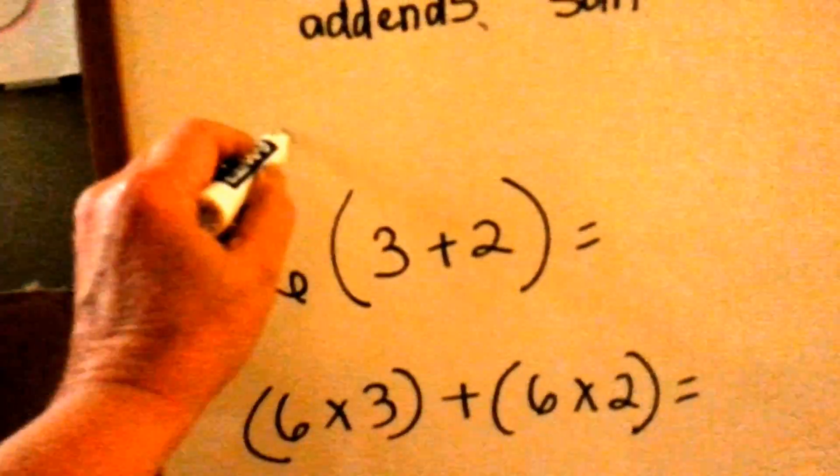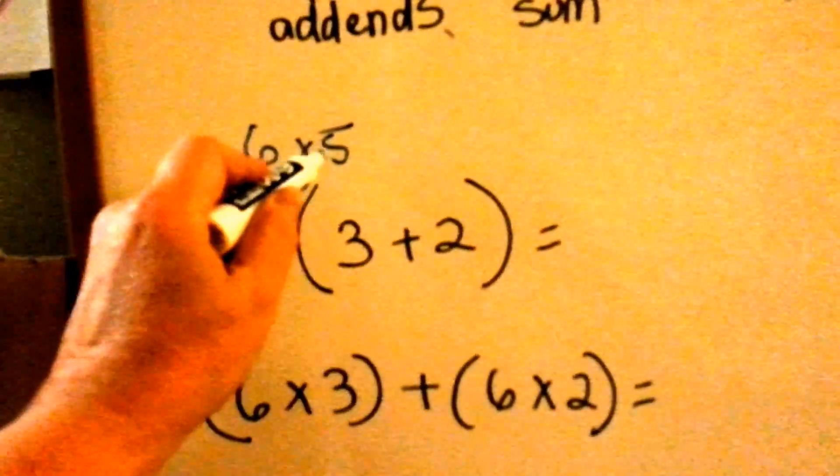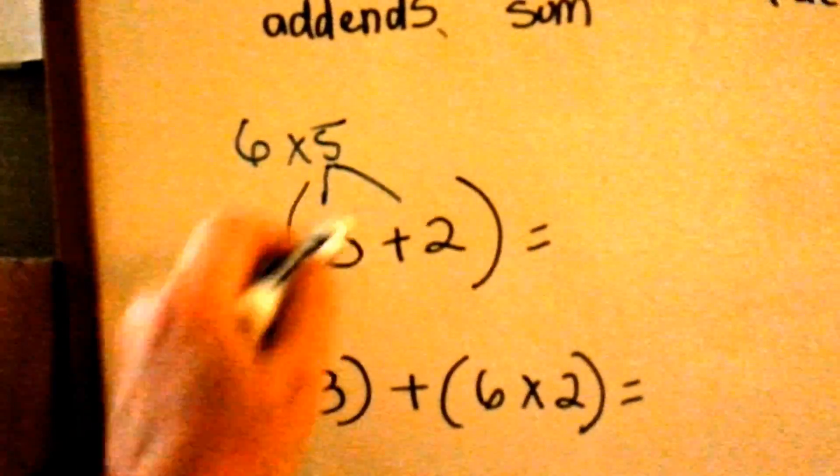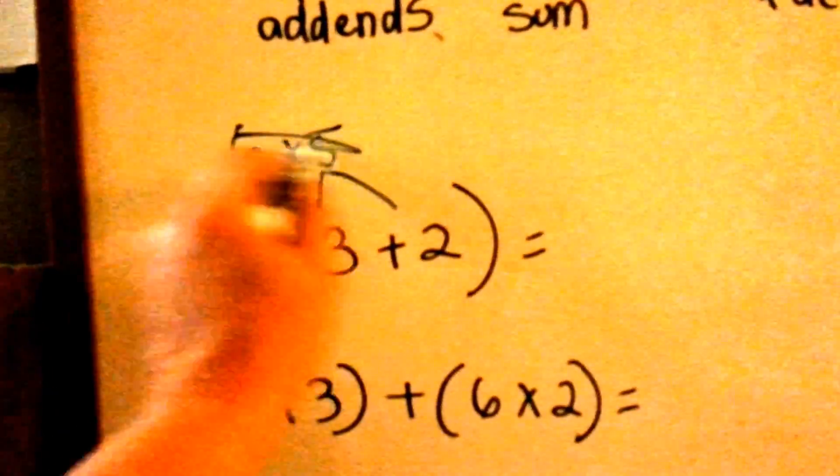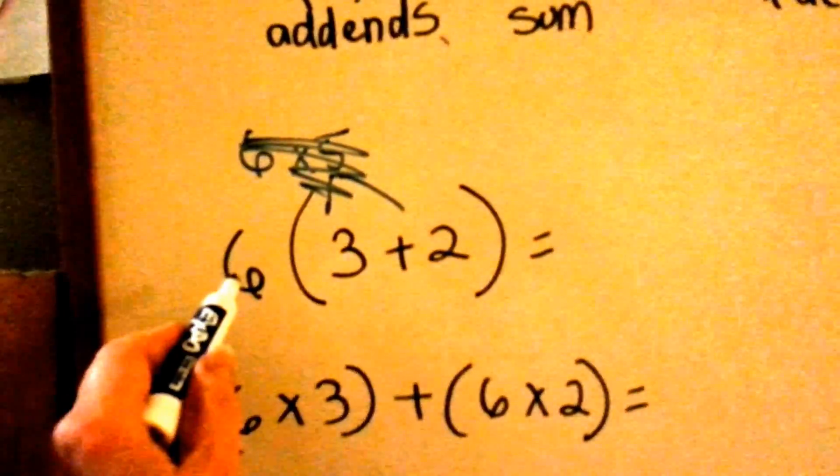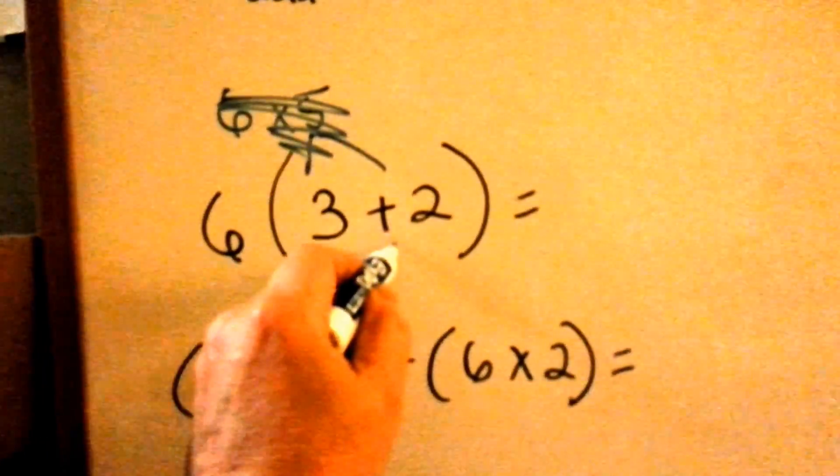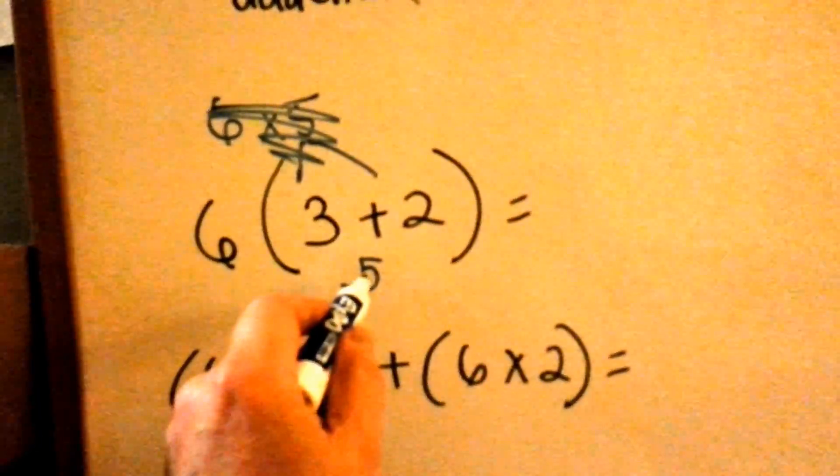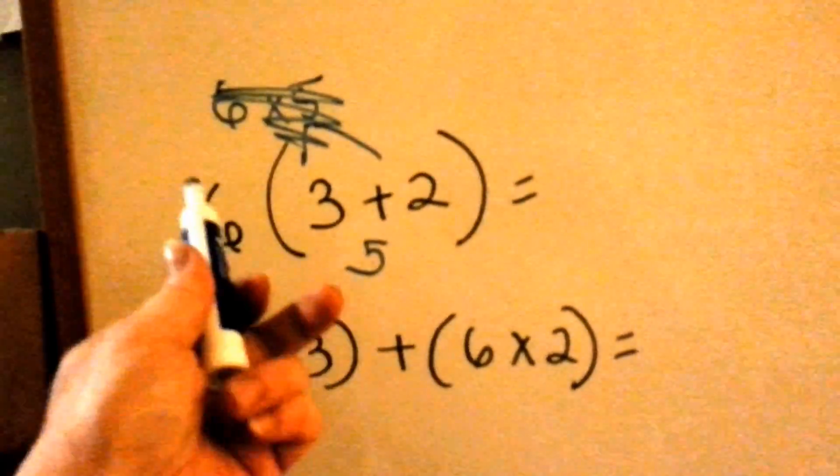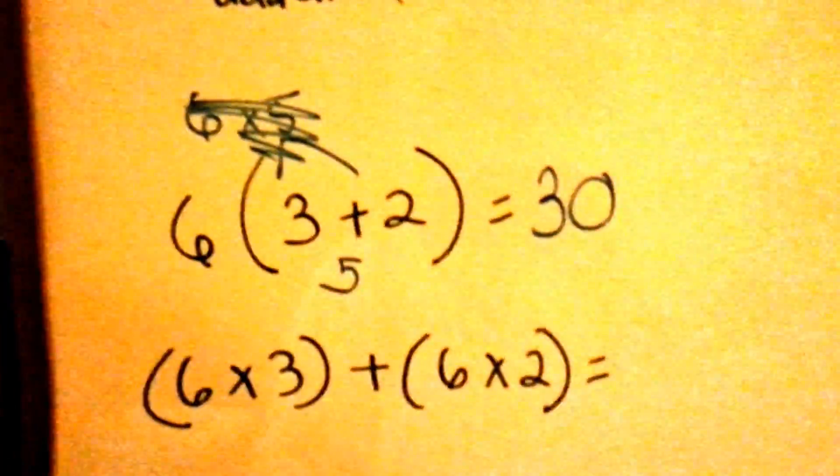We had 6 times 5. And the 5 can be split into a 3 and a 2. So, what we did was, we didn't do it this way. We did it 6 times 3 plus 2. So, we add the 3 plus 2 first. That gives us 5, and then we say 6 times 5. 5, 10, 15, 20, 25, 30. 6 times 5 is 30.